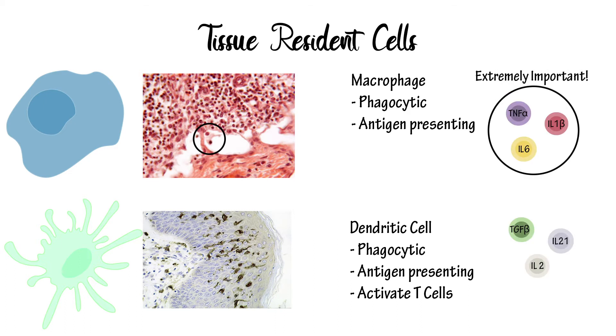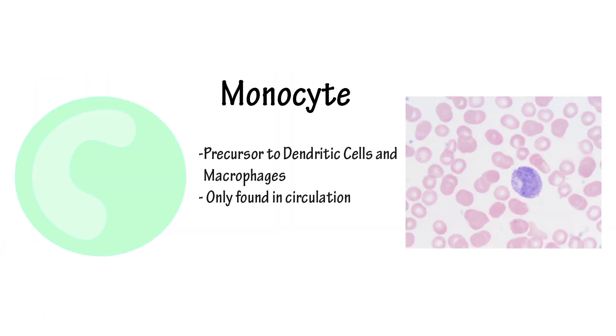More on cytokines later. Monocytes are the precursor to dendritic cells and macrophages. These cells are only found in the blood, and when they exit blood vessels, they become macrophages.